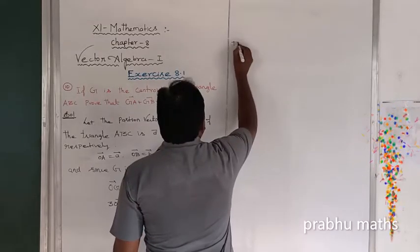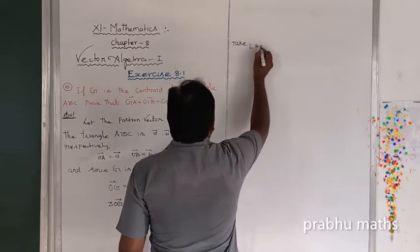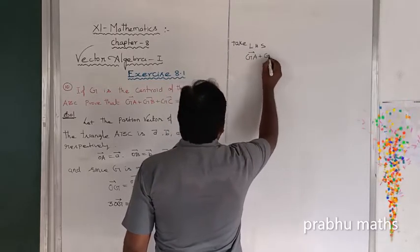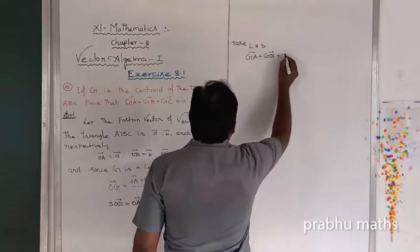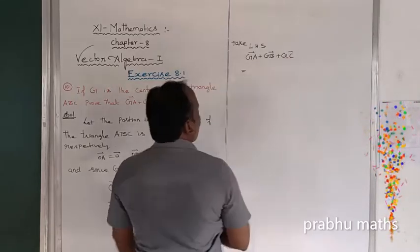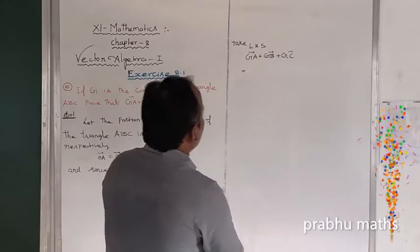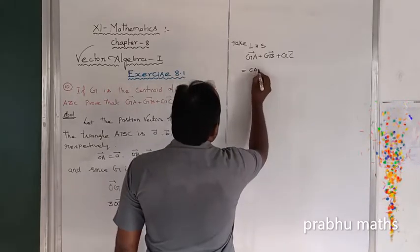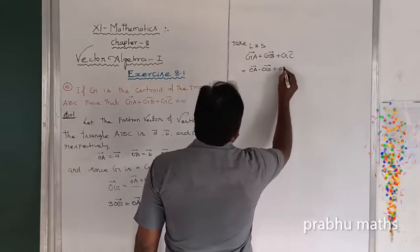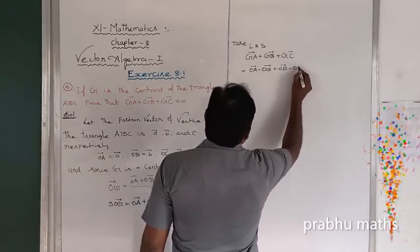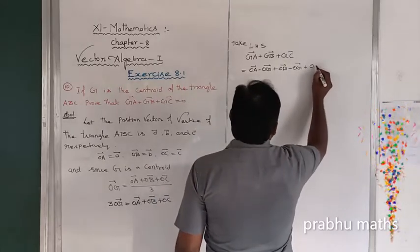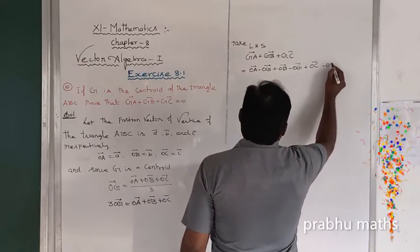Let us take LHS: GA vector plus GB vector plus GC vector. This equals, writing in position vector form, 3 terms: OA vector minus OG vector, plus OB vector minus OG vector, plus OC vector minus OG vector.